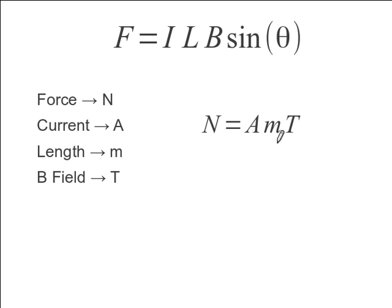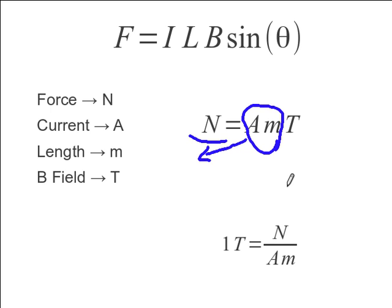Now, if we wanted to use this equation to help us find an alternate unit for Tesla, we take this amp meter and divide it under from our newtons. And what we end up with is that one Tesla is equivalent to a unit of one newton per amp meter.